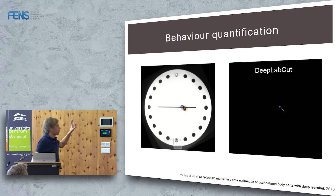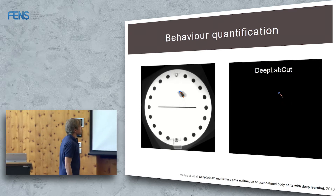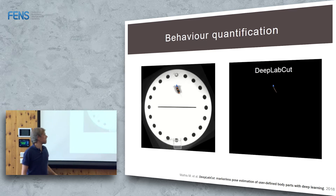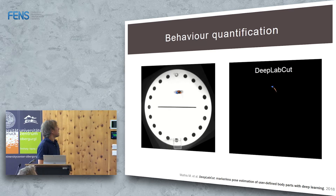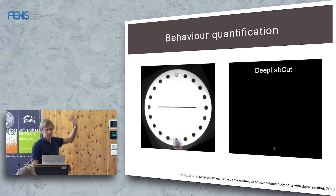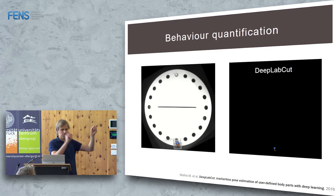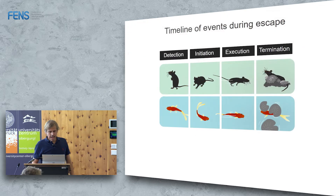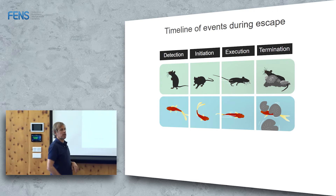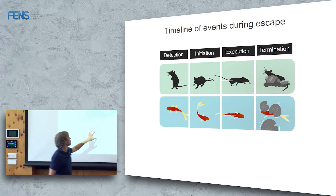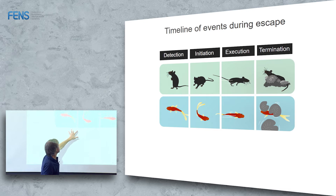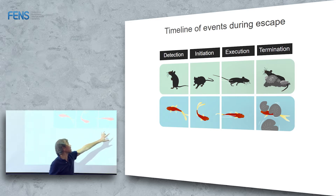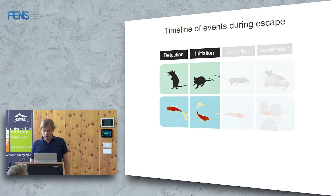Behavior quantification is extremely important. We use DeepLabCut to do this — it's an incredible minimally supervised deep learning algorithm that extracts features you want and works incredibly well. We can reduce the mouse into a couple of vectors that we can quantify. I'll tell you about two stories: one about detecting stimuli — the mouse version of Florian's talk — and then about an ongoing story about the execution of escape behavior. All done by Dom Evans and Vanessa, with help from Jara and Ruben.